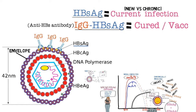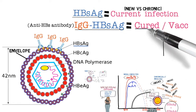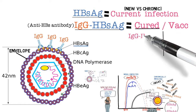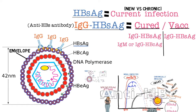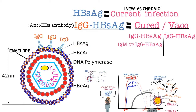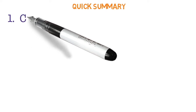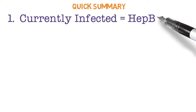IgG hepatitis B surface antigen equals either a previously exposed patient who cured themselves or a vaccinated patient. The way we can tell the difference is that a patient who cured themselves will also produce IgM or IgG hepatitis B core antigen, because they've seen the virus. The vaccinated patient will not, because core antigen is not in the vaccine.